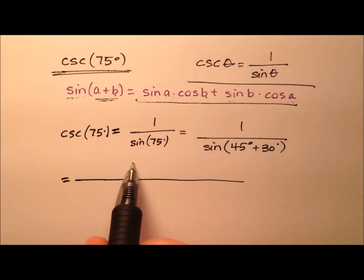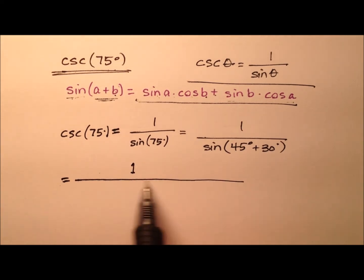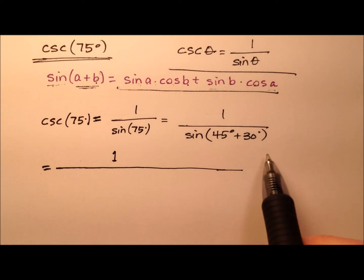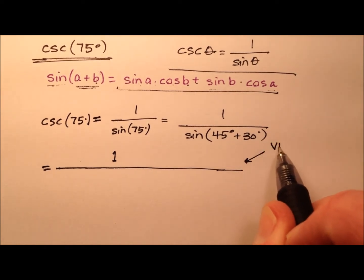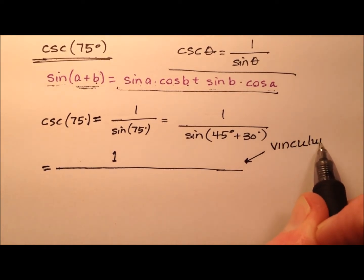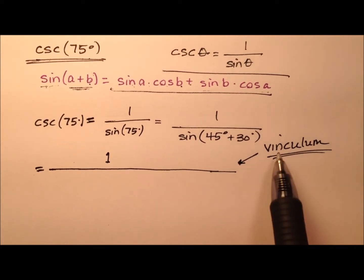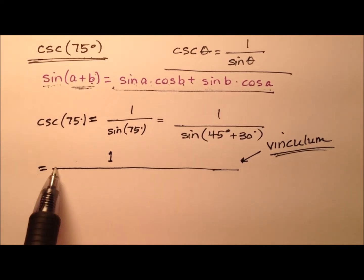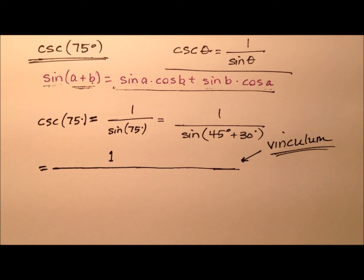We have this 1 over, and then we've got a giant fraction bar here. Consequently, this fraction bar is called a vinculum. In mathematics, a vinculum is any horizontal bar used to group digits.